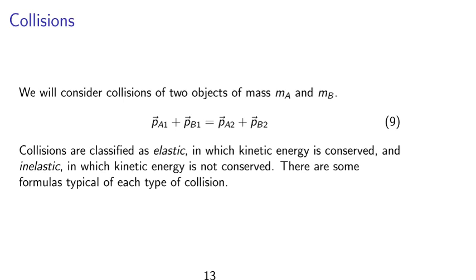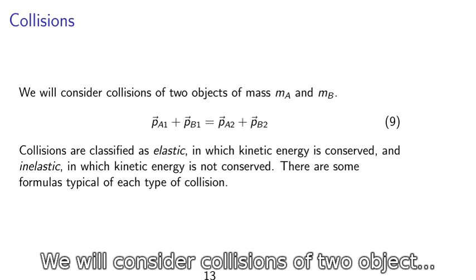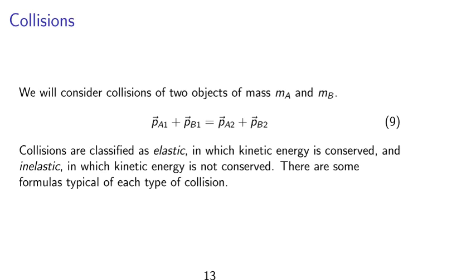Collisions. We will consider collisions of two objects of mass ma and mb. So we have pa1 plus pb1 equals to pa2 plus pb2. The p's are vectors. Collisions could be elastic or inelastic. Elastic in which kinetic energy is conserved and inelastic in which kinetic energy is not conserved. There are some formulas typical of each type of collision.